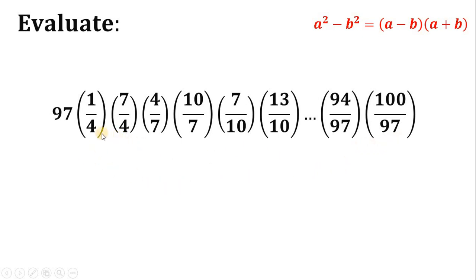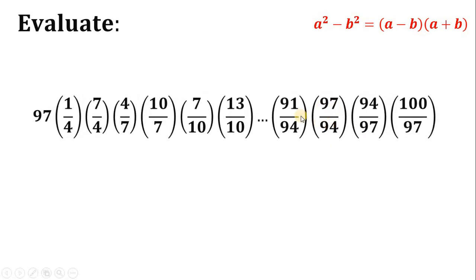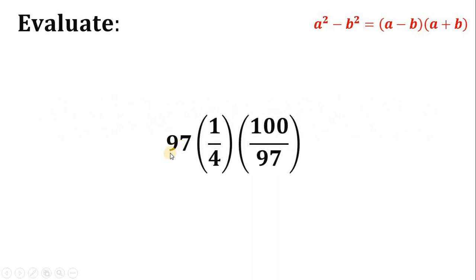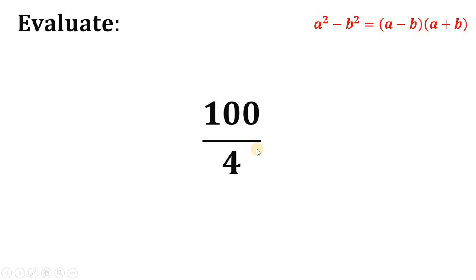Our full expression now becomes 97 times 1 over 4, times 7 over 4, times 4 over 7, times 10 over 7, and so on until 100 over 97. To see the cancellations clearly, we also include terms like 97 over 94 and 91 over 94 before 94 over 97. We can see that 7 over 4 times 4 over 7 is just 1, and 10 over 7 times 7 over 10 is just 1. Similarly, 97 over 94 times 94 over 97 is 1. In fact, all terms between 1 over 4 and 100 over 97 cancel out. The leading 97 also cancels, leaving us with 100 over 4, and 100 divided by 4 is simply 25.